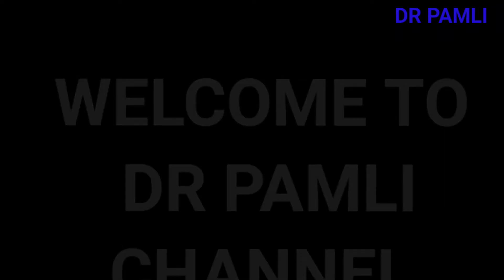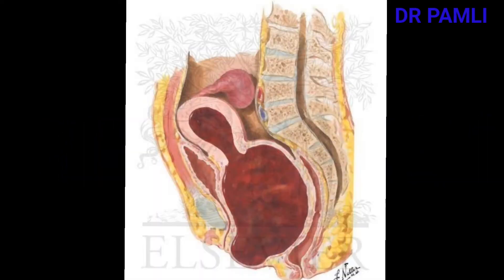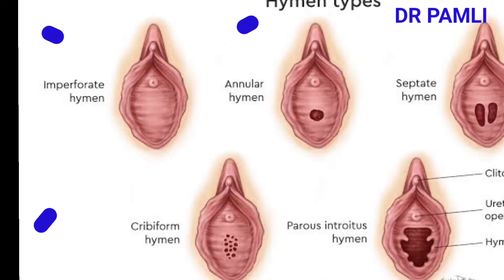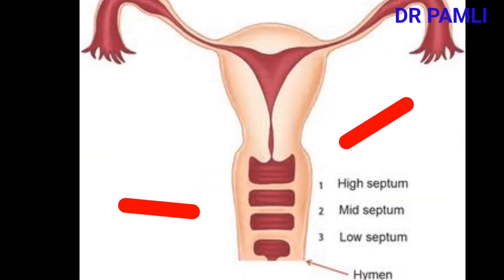Welcome to Dr. Pamli's channel. In today's video we are going to learn about hematometra, or the so-called hemometra. By definition, this is a collection or retention of blood in the uterus secondary to imperforate hymen or transverse vaginal septum.